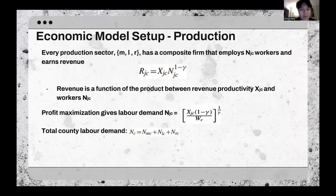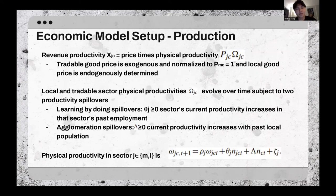The revenue function for the firm is a function of the product between revenue productivity and the workers. Doing some algebra, you can find equations that solve profit maximization and the total labor demand for the county. Revenue productivity is assumed to be price times physical productivity. Physical productivity in the sector evolves over time, subject to two productivity spillovers.